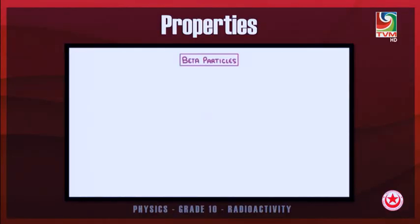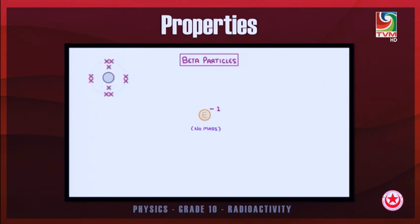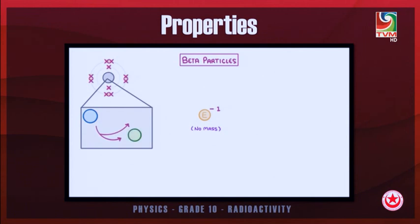Beta particles are a beam of fast-moving electrons. They do not have any mass. You might be wondering where this electron comes from — it is not from the orbital of the atom, but rather a neutron is converted into a proton and an electron, and this electron is bombarded out at a very high speed.